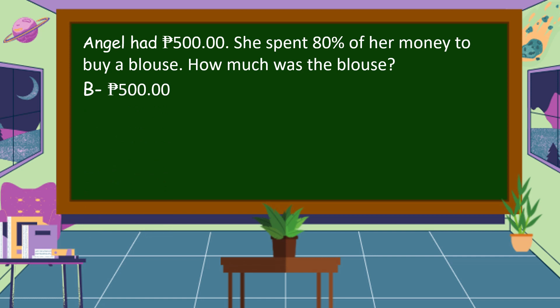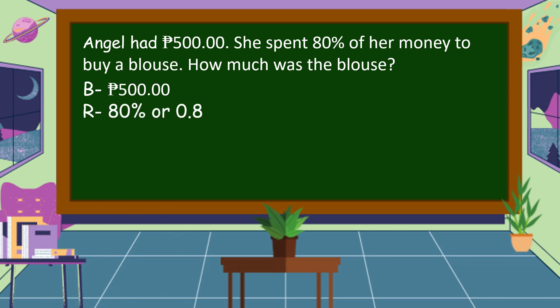80%, as we know, a number having a percent symbol beside it is the percent rate. So 80% is our rate. Don't forget to change percent to decimal form, so 80% is equal to 8 tenths. We're going to find the percentage of the number. What is the formula to find the percentage? P is equal to R times B, or rate times base.